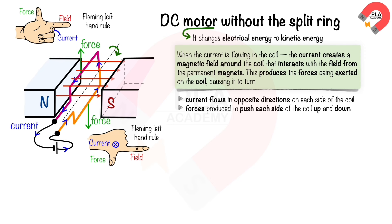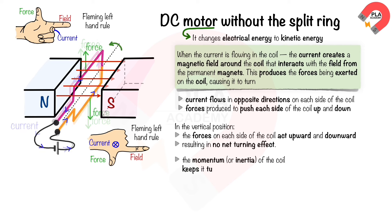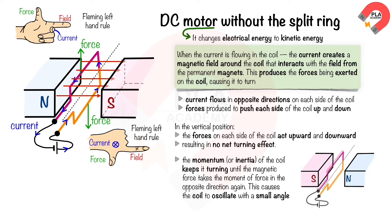The coil rotates until it reaches the vertical position, where the magnetic forces on each side cancel each other out, resulting in no net turning effect. However, the momentum of the coil keeps it turning until the magnetic force acts in the opposite direction again, causing the coil to oscillate with a small angle. To prevent this and ensure continuous rotation in one direction, a split ring commutator is used.